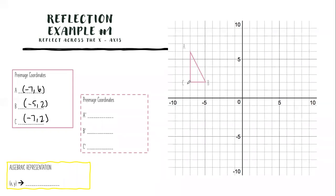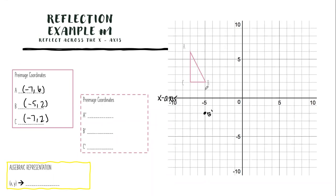Now watch how I do this. I want to reflect this across the x-axis — here is my x-axis. Always know which axis is being referenced. I'll start with B. B is two units away from the x-axis going up, so it's going to be two units away going down. Right here is B prime, because it's an exact reflection — two away this way, so two away the other way from the x-axis.